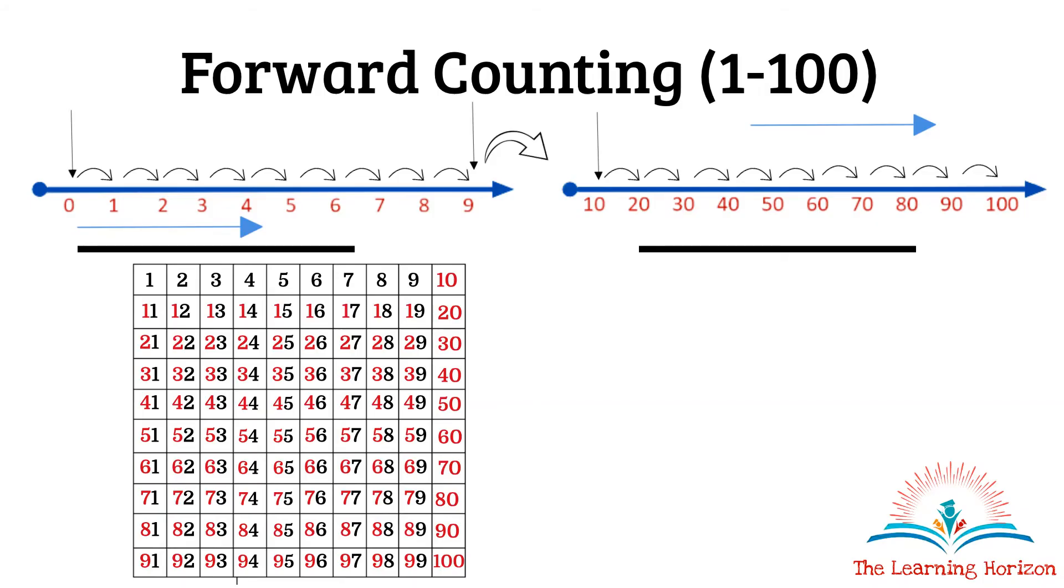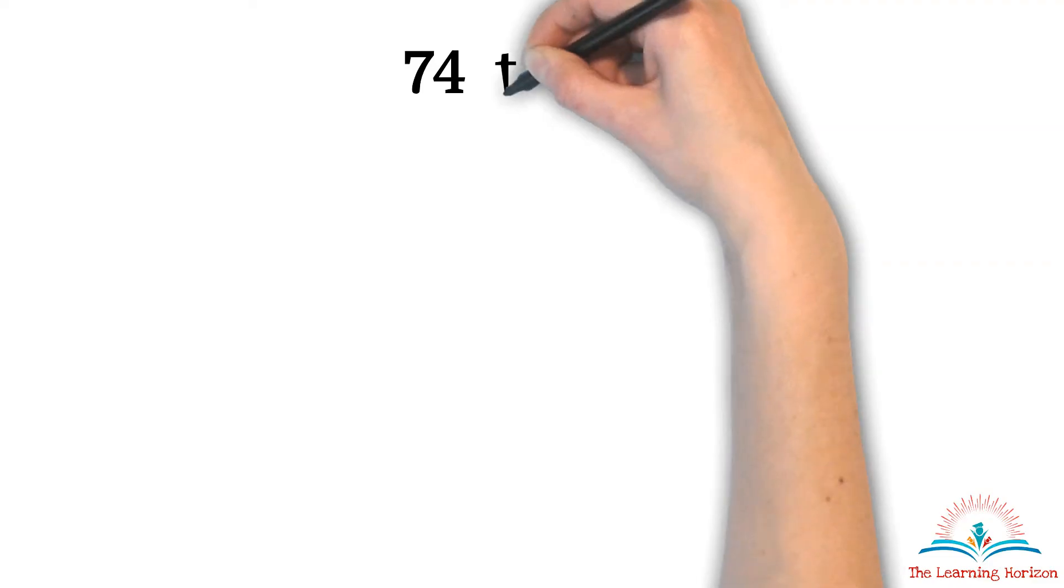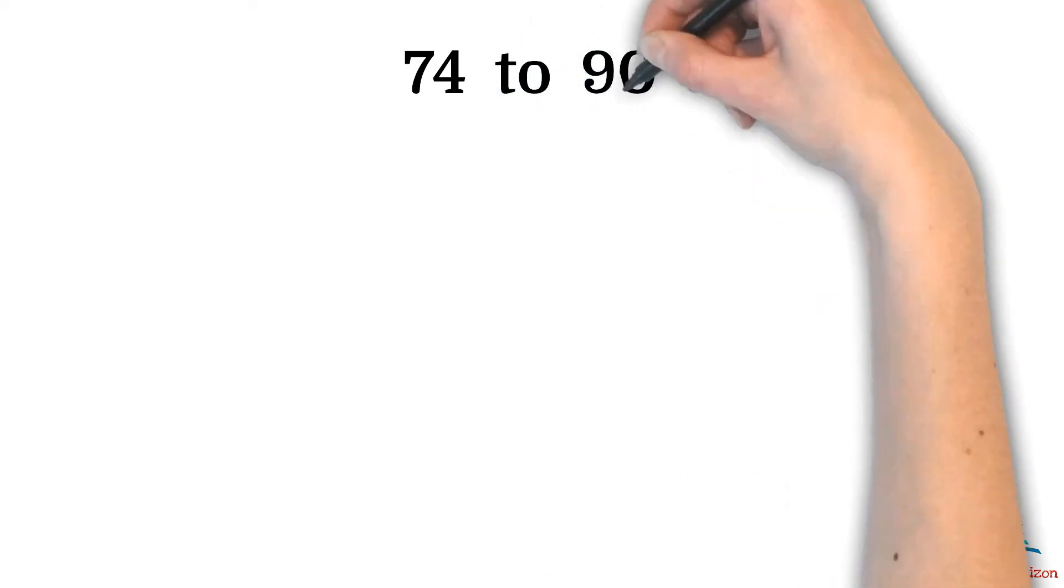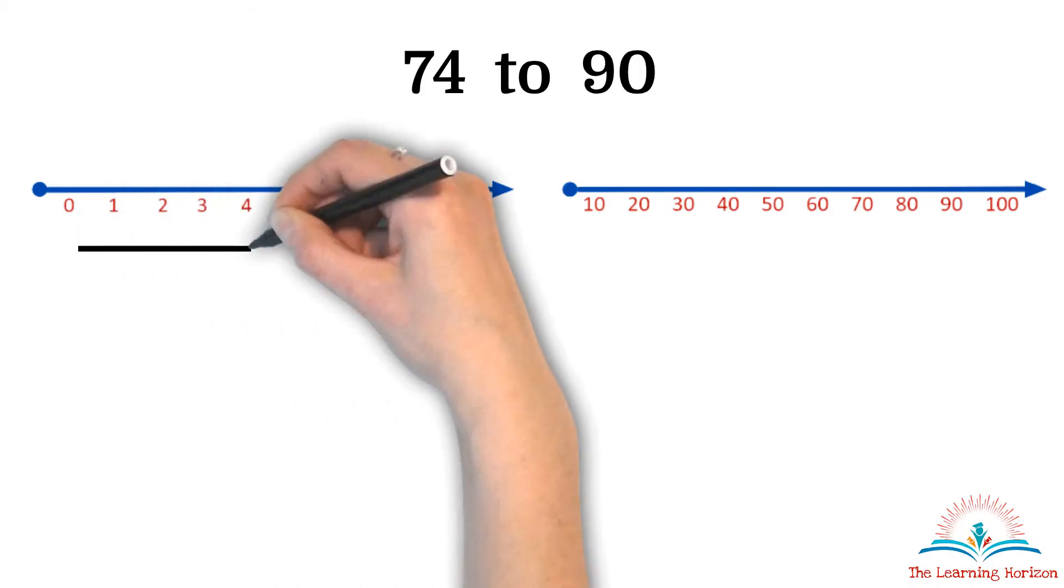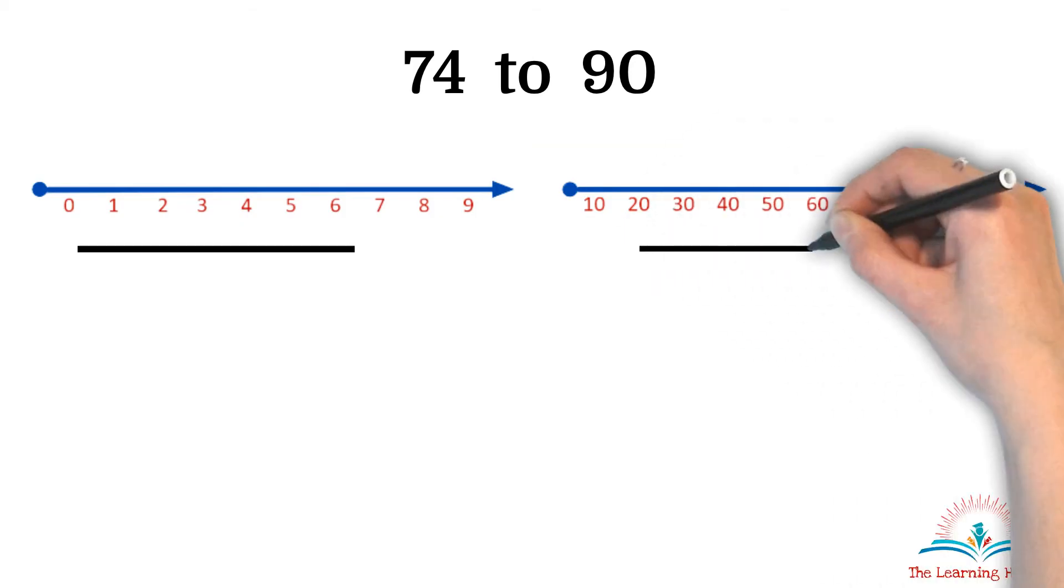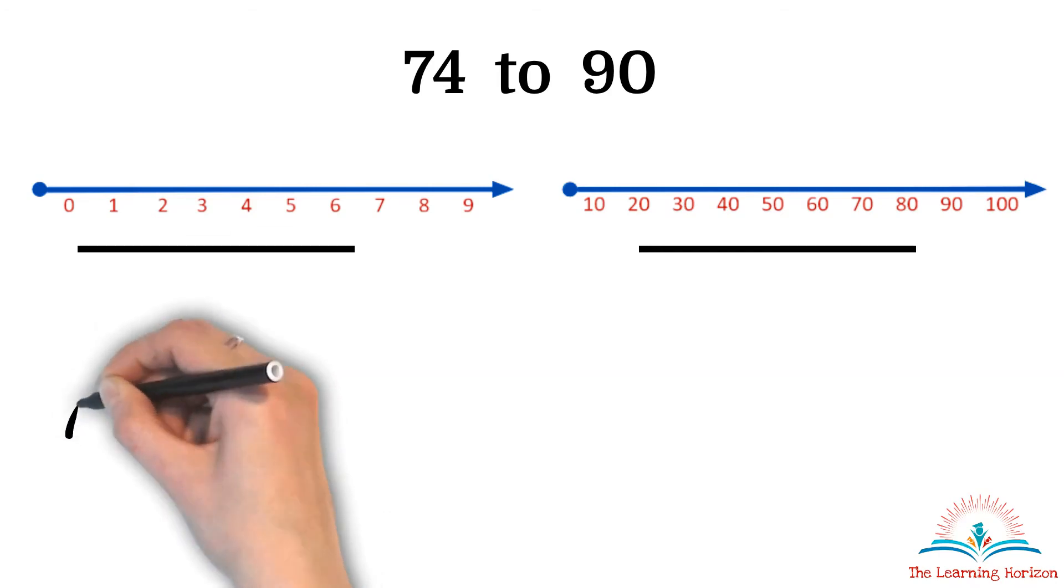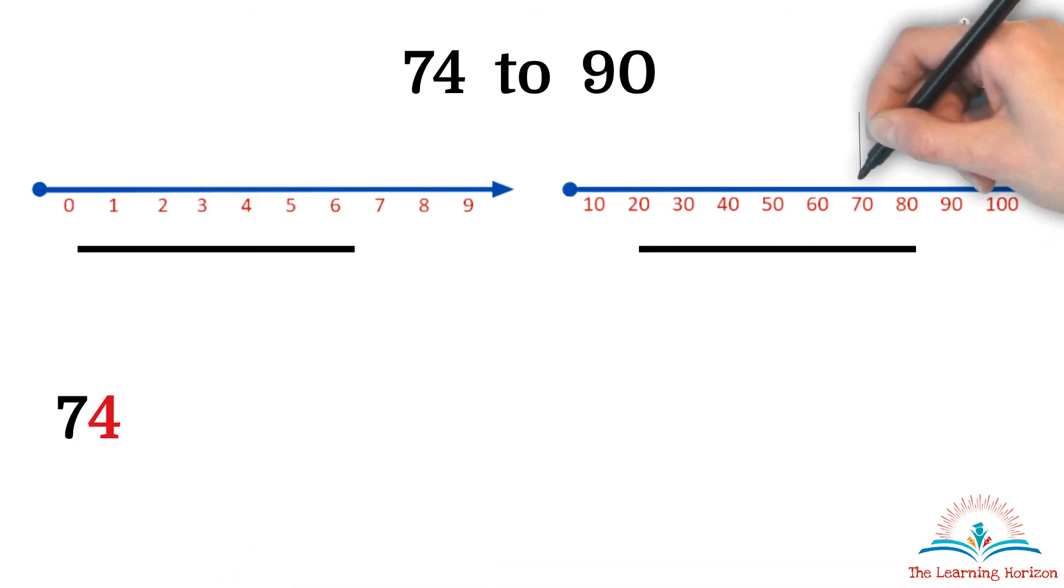The same logic is applicable for counting on from any number. For example, let us count on from 74 until we get 90. First, we will have both our number lines: 0 to 9 and other number line for the tens, that is 10 to 100. We have to begin counting from 74. So we will mark 70 on this number line and 4 on this number line.